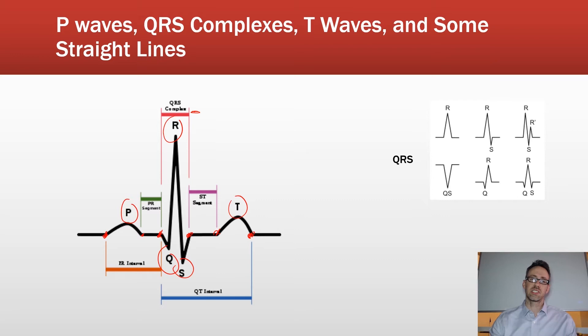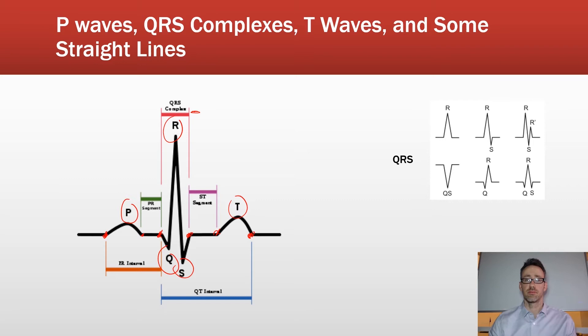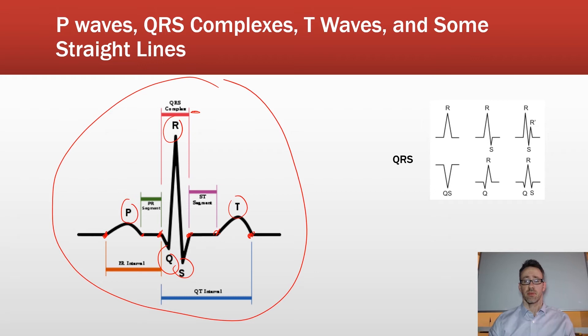We need to know the normal timing and morphology of each wave before we can recognize abnormalities. The P, QRS, and T waves each have characteristic duration, amplitude, and morphology. We will also be working with a 12-lead ECG, which provides 12 different graphical representations of those waves, each looking at the heart from a slightly different angle and therefore showing slightly different morphologies.